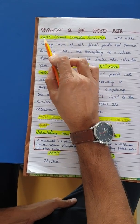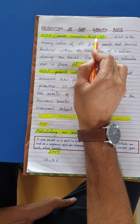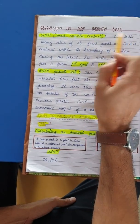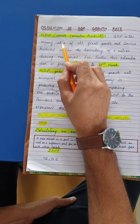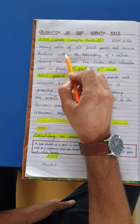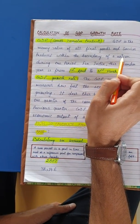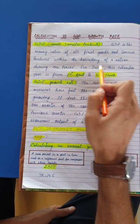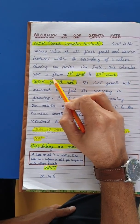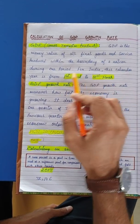So first of all, GDP — Gross Domestic Product. GDP is the money value of all final goods and services produced within the boundary of a nation during one period. For India, this calendar year is from 1st April to 31st March.